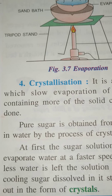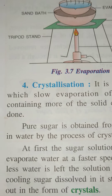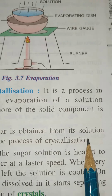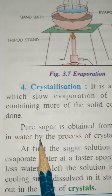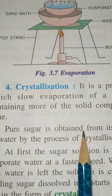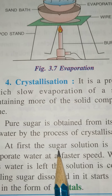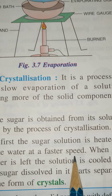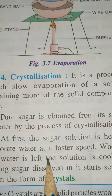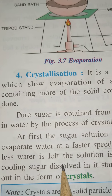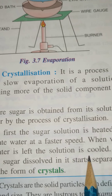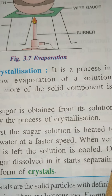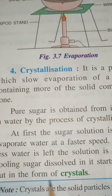For example, when we want to obtain pure sugar from its solution in water, we use this process of crystallization. First, the sugar solution is heated at a very high rate. But when very little water remains, we start cooling it, and after cooling it will separate out in the form of crystals.